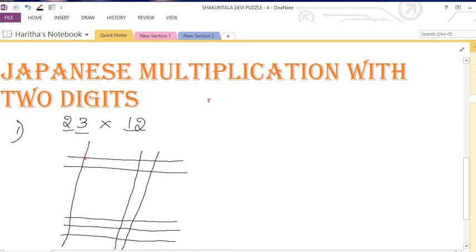Where these two lines are joined, just count and circle those dots. Where these two lines are joined, I am circling the dots. And here also. Now just draw a line for this.